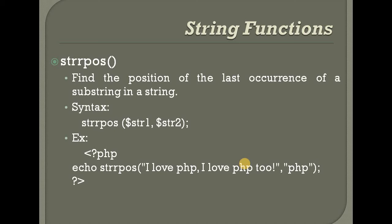Next is strrpos — string r position. The difference is: strpos finds the first occurrence, while strrpos finds the last occurrence. strrpos is used to find the position of the last occurrence of a substring in a string.